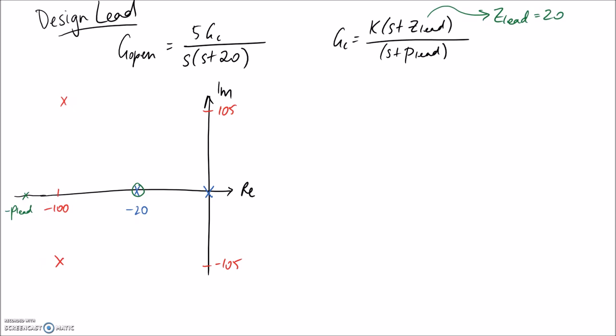I'm going to use the graphical method to work this out. That means we pick one of our desired poles — I'll pick the upper one — and look at the angles made between each of our poles and zeros and that desired pole. You can equally pick the lower one and get the same answer. We measure angles from the positive real axis anti-clockwise. I'll call theta 1, theta 2, and theta 3 for the respective angles.